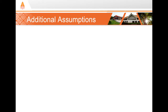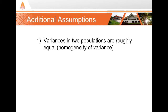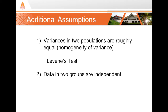The independent t-test requires two additional assumptions in addition to the basic assumptions that apply to all t-tests. First, we have to assume that the variances in our two sample groups are roughly equal, and we can quantify that using something called Levene's test. The second assumption is that the data in our two groups are independent from one another, and generally this means that the groups are mutually exclusive.